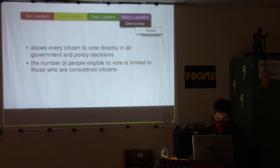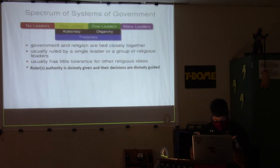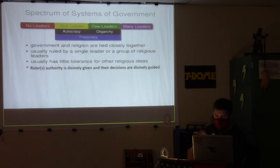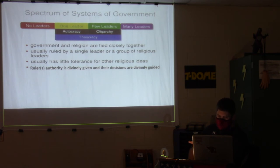Theocracy still exists in certain nation-states today. The most prominent example is the Vatican — the Pope is head of state, but the Pope answers to God. Government and religion are closely tied together, usually ruled by a single or group of religious leaders — common in the Middle East. There is little tolerance for other religious ideas, and the ruler's authority and decisions are considered divinely given and guided.